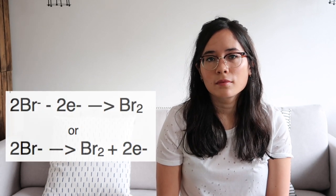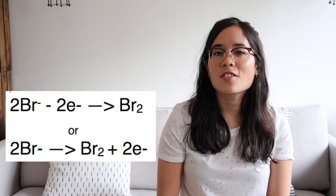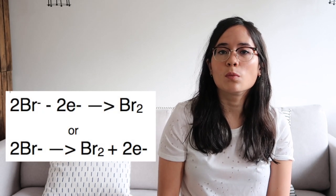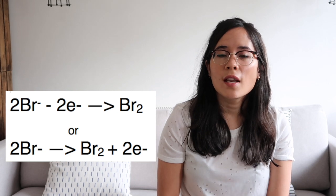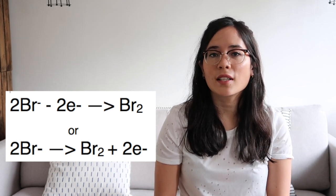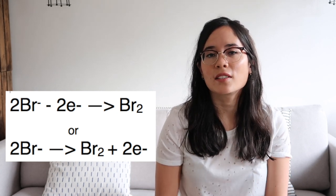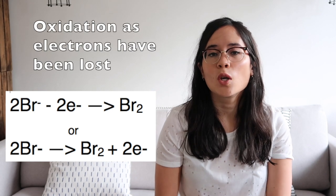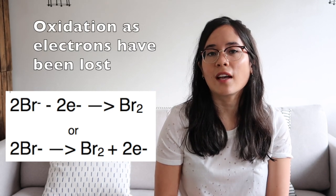Write the ionic equation for the discharging of bromine — is this reaction oxidation or reduction and why? Because bromine started off as a bromide ion which is negatively charged, you need to take away that negativity, so you're taking away electrons, which means you're carrying out an oxidation process.